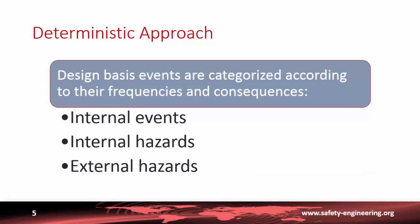The design basis events are categorized according to their frequency and consequences. We make a distinction between internal events — failures of the system itself, components, or plant internal hazards such as internal flooding, internal fire, or load drops — and external hazards, which are events that could occur outside but may affect the plant, such as earthquake, flooding, external fire, or a plane crash. We will see a little bit later how these hazards are treated.